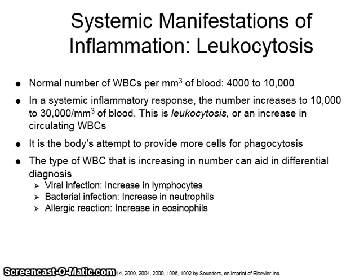The type of white blood cells that is increasing in number can aid in differential diagnosis. A viral infection will show an increase in lymphocytes, bacterial infection an increase in neutrophils, and an allergic reaction will show an increase in eosinophils.